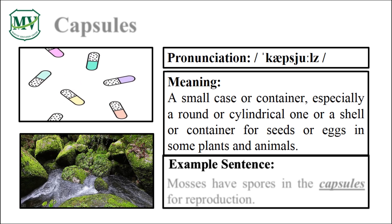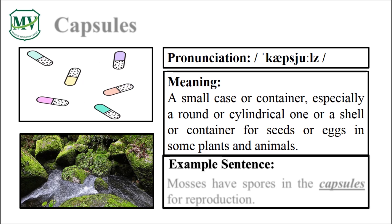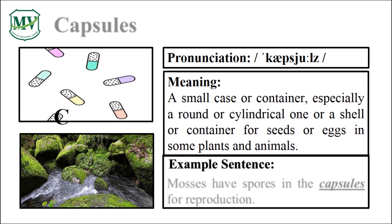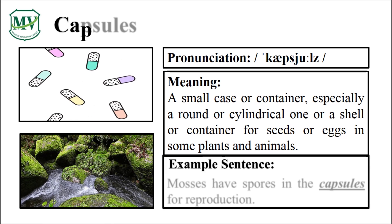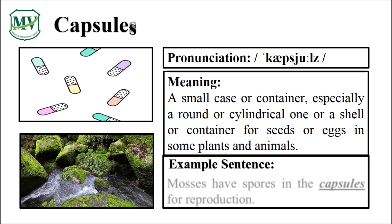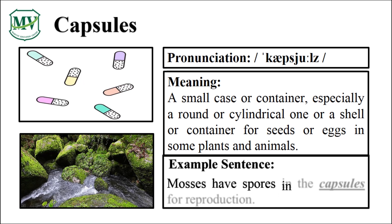Please repeat the word after me. Capsules. Good job! Let's spell it. C-A-P-S-U-L-E-S. Capsules. Great! Mosses have spores in the capsules for reproduction. Can you try reading the sentence on your own?